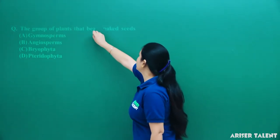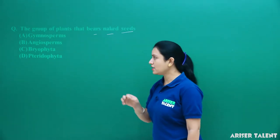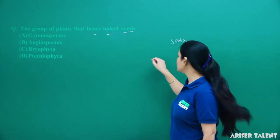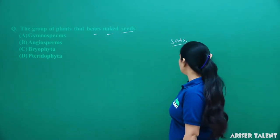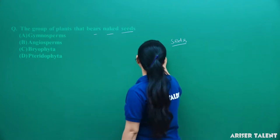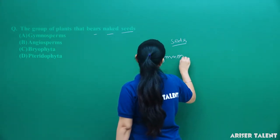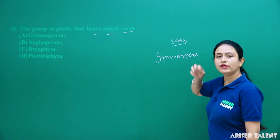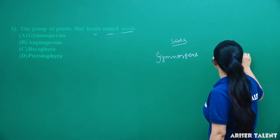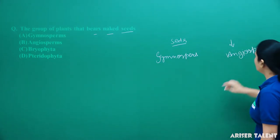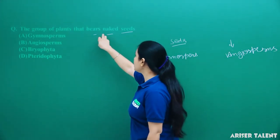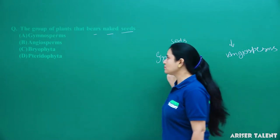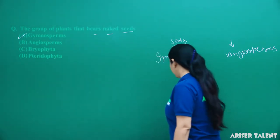Next, the group of plants that bears naked seeds. When we studied classification, we learned that plants are categorized into two groups on the basis of seeds — whether they are naked or found inside a fruit. Those with naked seeds are grouped under Gymnosperm, and plants whose seeds are found inside a fruit are Angiosperm. So here, the group of plants with naked seeds — seeds without any covering — is Gymnosperm. Option A is the correct answer.